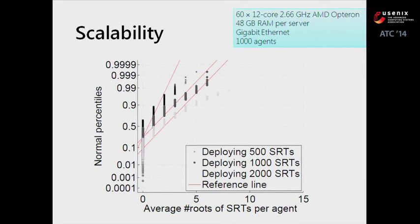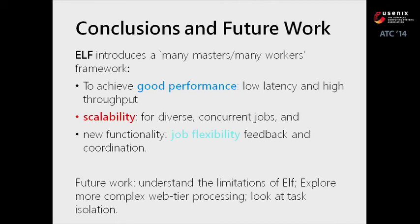The third result is about scalability. Our test setup used thousands of agents with 2,000 jobs deployed. We find that when deploying 2,000 Shell-Reduce Trees, 19% of nodes have fewer than five masters, meaning masters scale well into the system. Since masters are the most overloaded points, this confirms the system scales well. In conclusion, ELF supports good performance, scalability, and job flexibility. Future work includes understanding more limitations of ELF and looking at task isolation. Thank you.